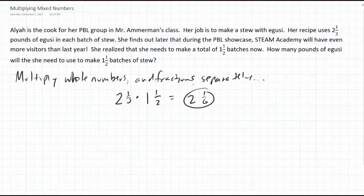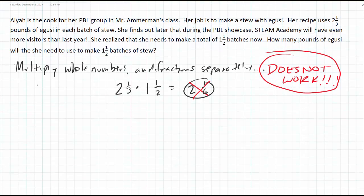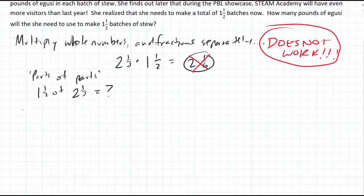That is not correct. That will not make sense. Does not work. Remember, that's a common mistake I saw very frequently recently. Let's go over strategies that do work. We're trying to find parts of parts - we need 1½ of 2⅓. The first strategy we learned was to use generic rectangles.